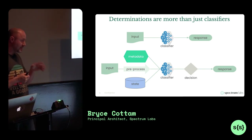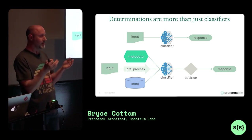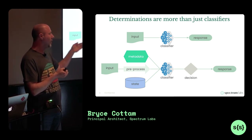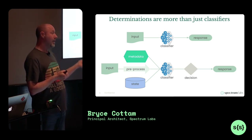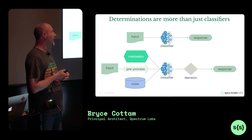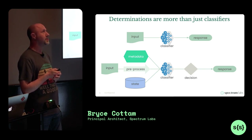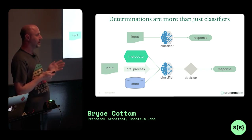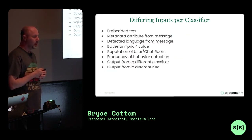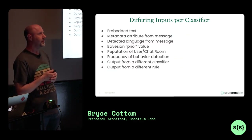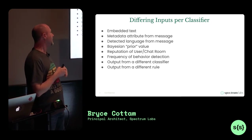It seems you have two choices: get together with an engineer and describe exactly what your classifier needs to run and how to interpret the output, or have some kind of documentation that is interpretable at runtime — not just human documentation. The different types of information our classifiers might want include embedded text, metadata, and other signals.